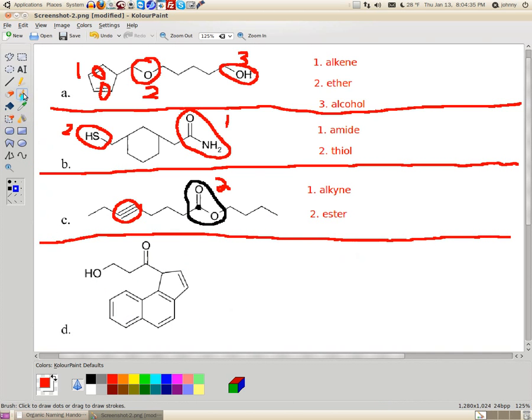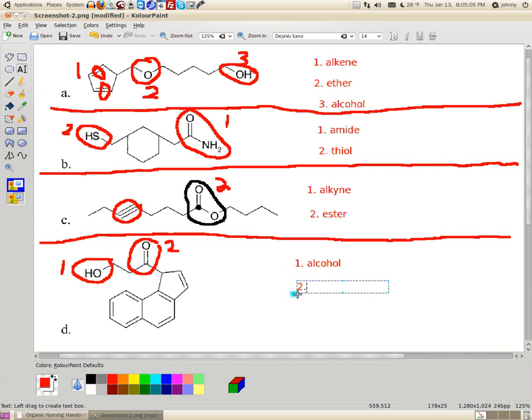Now, let's go on to D. Notice here that we have an alcohol group right here, number one. Alright, so let's go ahead and name that. Number one, alcohol, A-L-C-O-H-O-L. That's an alcohol. Here, notice that this double bonded O is attached to a central carbon. Notice that to its left and right is nothing but carbon chains. So this is a ketone, this number two here. Ketone. So let's go ahead and put it down. Number two, ketone.